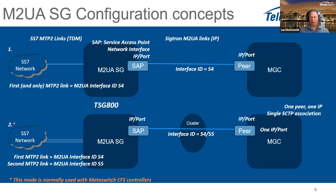Before getting into the M2UA configuration, it's important to understand some configuration concepts. If you have multiple MTP2 links, multiple interface IDs, multiple local ports, or multiple destination ports, you need to be careful. There are six different configurations we can do. The first and simplest has one MTP2 link attached to an M2UA interface ID — for example, interface ID 54 (sometimes called link ID).